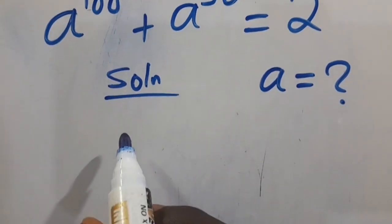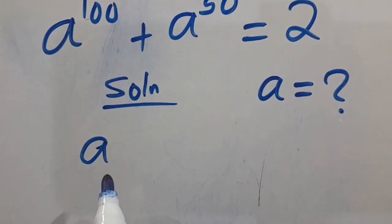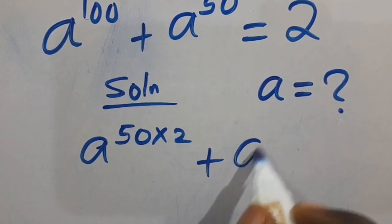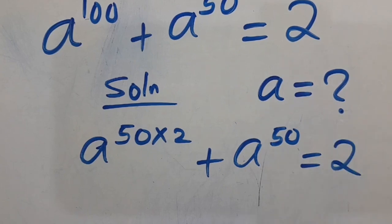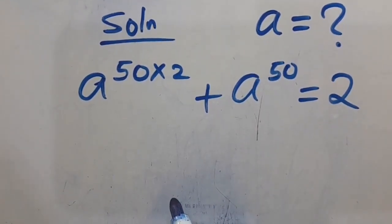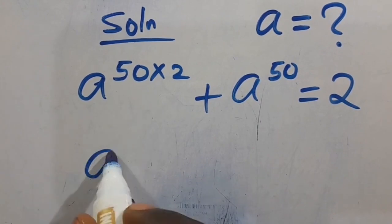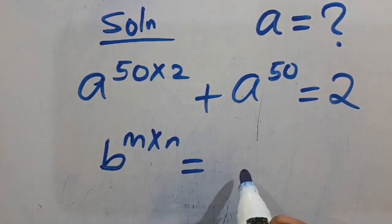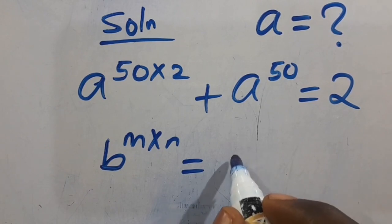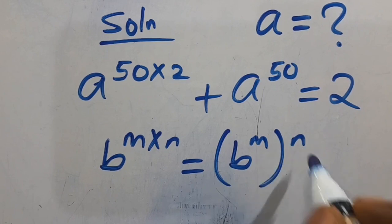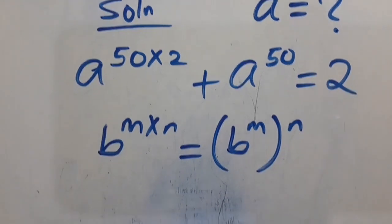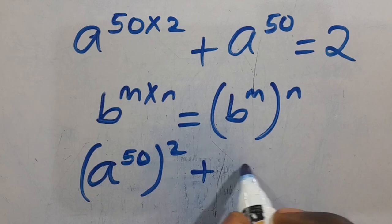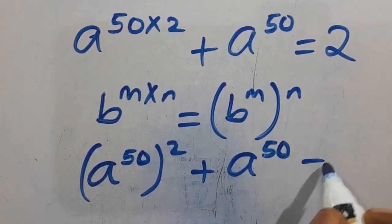From here, we can simplify 100 as 50 times 2, so we have A to the power of 50 times 2, plus A to the power of 50, equals 2. Recall that B to the power of M times N can be simplified as B to the power of M, in parentheses, to the power of N. Applying it here, we get A to the power of 50, in parentheses, to the power of 2, plus A to the power of 50, equals 2.